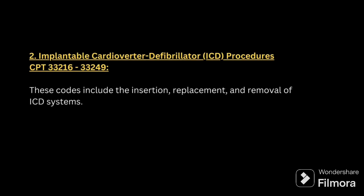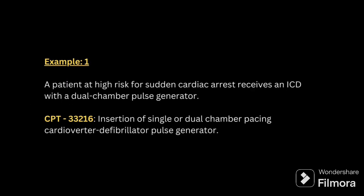Next is implantable cardioverter defibrillator ICD procedures, codes 33216 to 33249. These codes include insertion, replacement, and removal of cardioverter defibrillators. Example 1: a patient at high risk for sudden cardiac arrest receives an implantable cardioverter defibrillator with a dual chamber pulse generator. For this, we code 33216 — insertion of single or dual chamber pacemaker with a cardioverter defibrillator pulse generator.